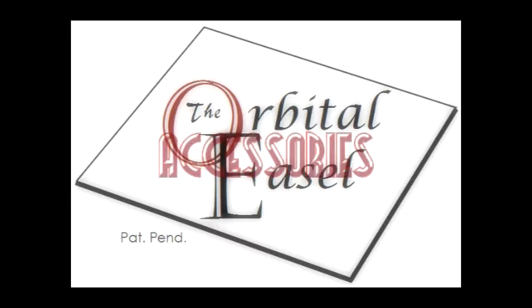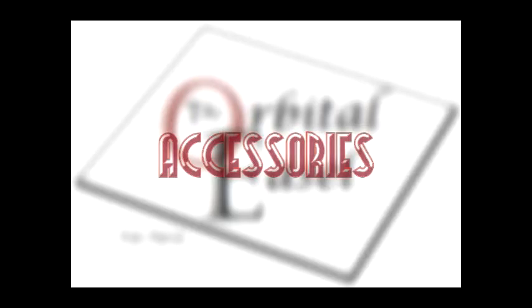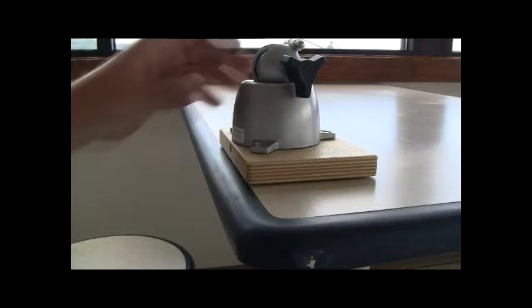The Orbital Easel can be ordered with either of two bases: the desktop base or the tripod base, either of which is available separately. This is the tripod base, lighter and more compact than the desktop base. You can use it with a table, but you need to clamp it in place.